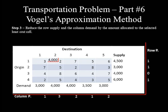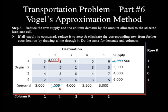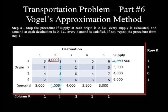Step 3: Reduce row supply and column demand by the amount allocated. Reducing the allocated 4,000 from the corresponding supply and demand decreases the demand from 4,000 to 0 and supply from 4,500 to 500. Row 1 is not eliminated because 500 units of supply remain. Column 2 must be eliminated by drawing a line through it because its demand is reduced to 0. Since only column 2's demand is satisfied and the remaining 4 column demands and all 4 origin supplies are unconsumed, we continue the allocation by repeating the steps.